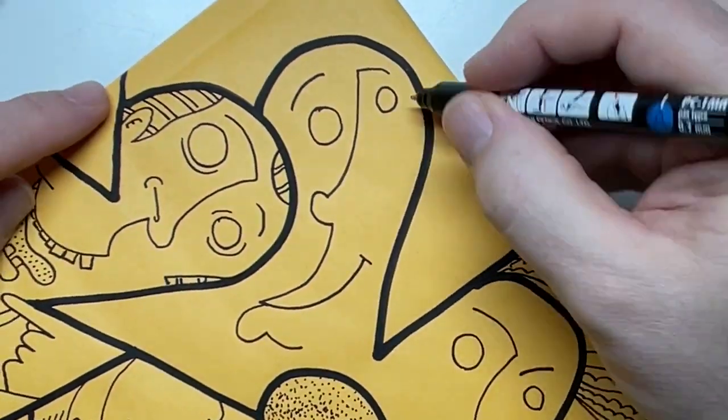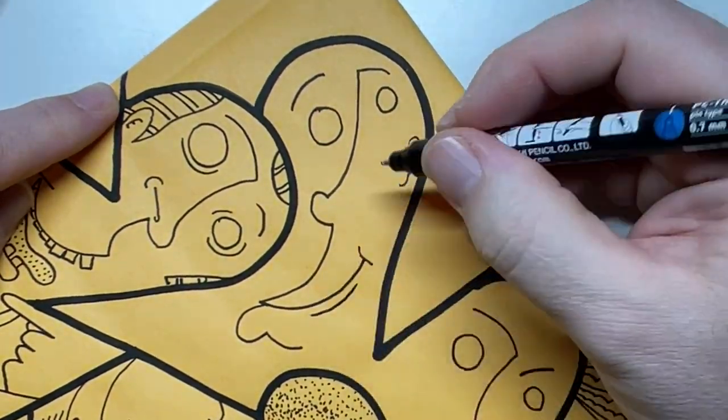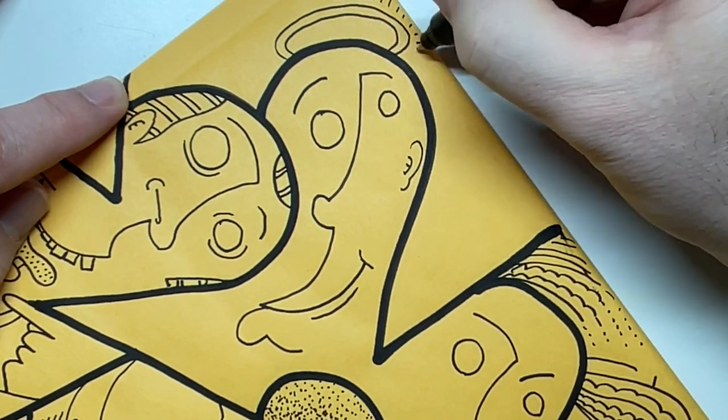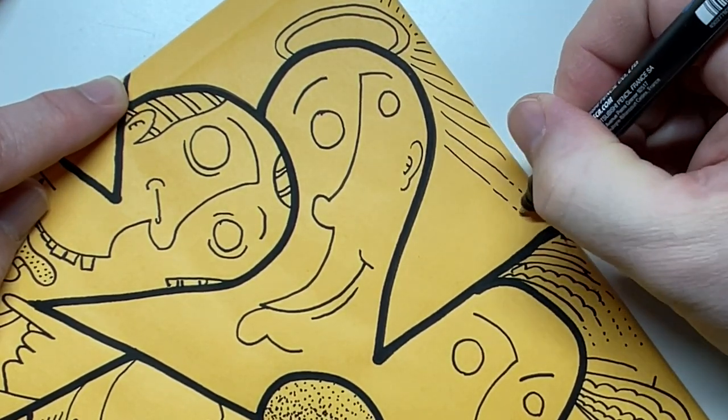These Posca markers, when they're dry, you can spray them with water and they're good to go. They don't really bleed off. They don't get ruined or muddy or anything like that. So that's a benefit there too.